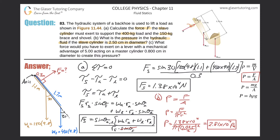Part C asks: what force would you have to exert on a lever with a mechanical advantage of 5, acting on a master cylinder 0.8 centimeters in diameter, to create this pressure? First, let's find the force the master cylinder must apply. By Pascal's principle, the pressure the master cylinder exerts equals the pressure the slave cylinder exerts — which we already know.